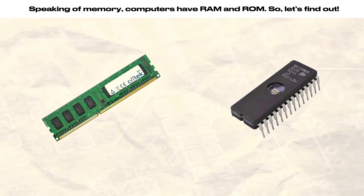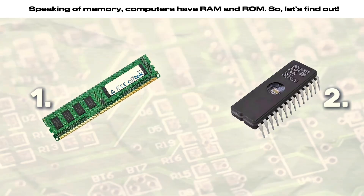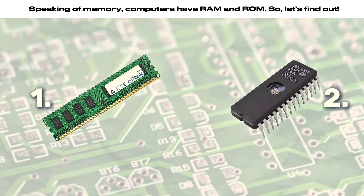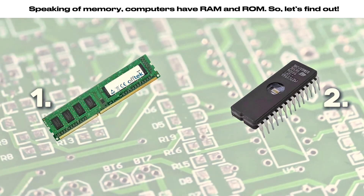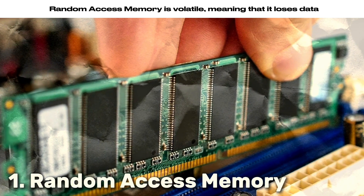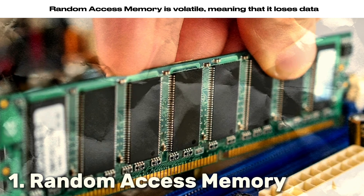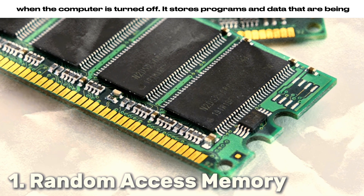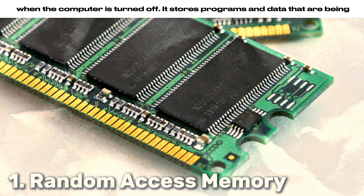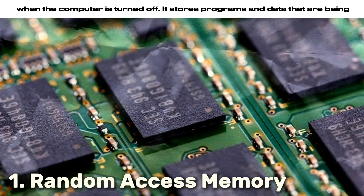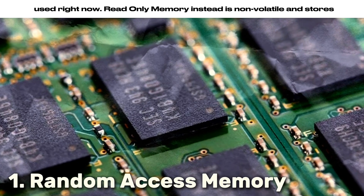Speaking of memory, computers have RAM and ROM, so let's find out. Random Access Memory is volatile, meaning that it loses data when the computer is turned off. It stores programs and data that are being used right now.